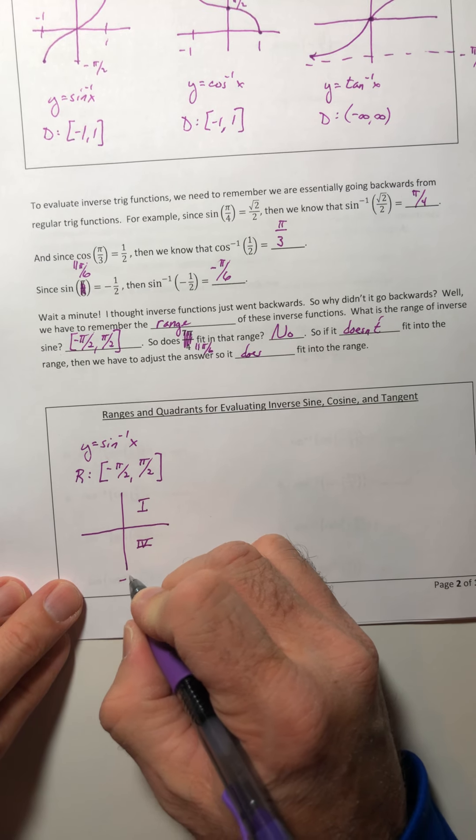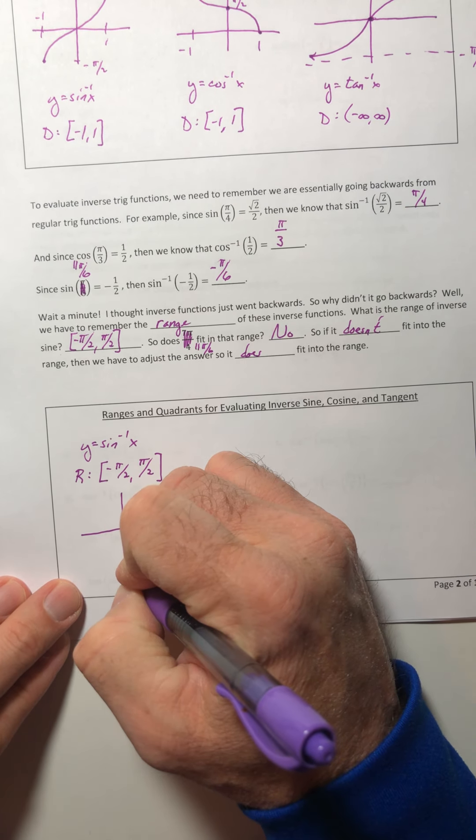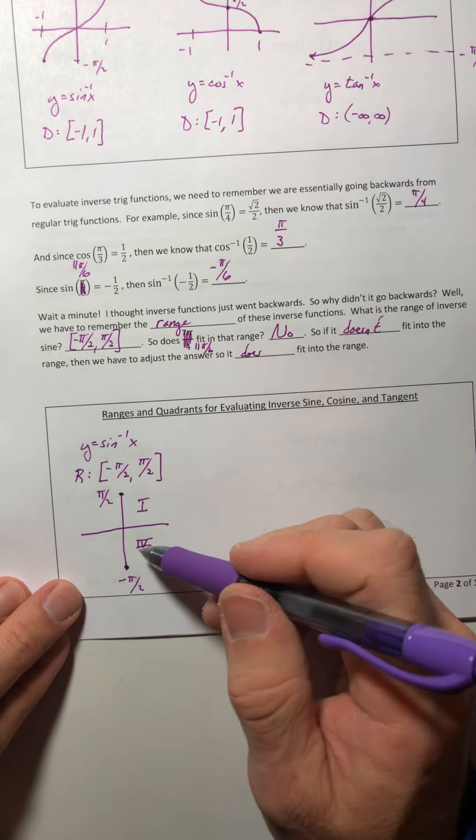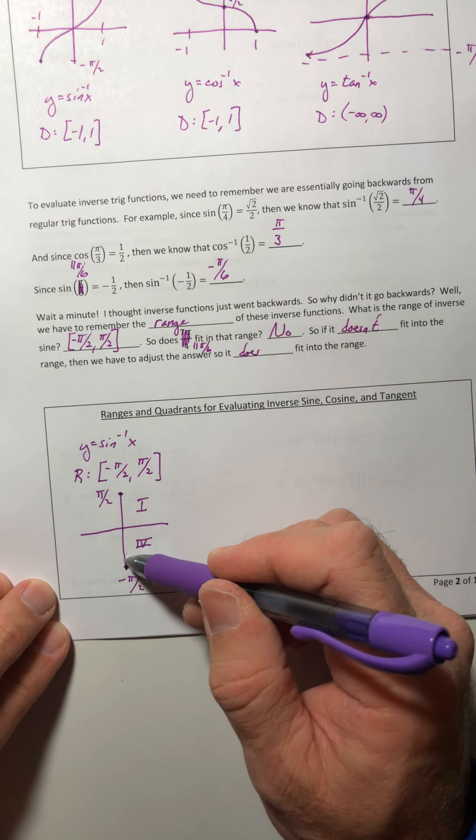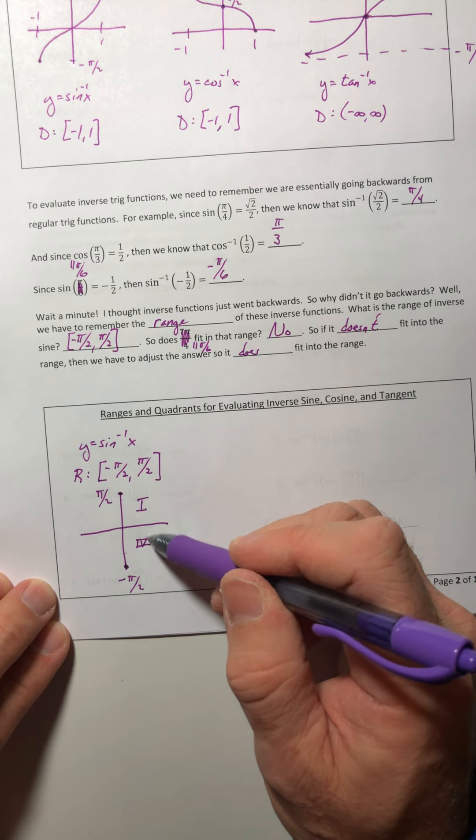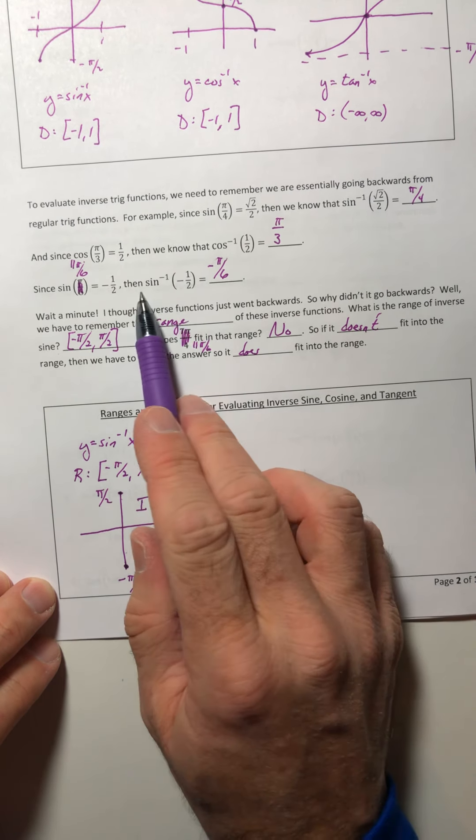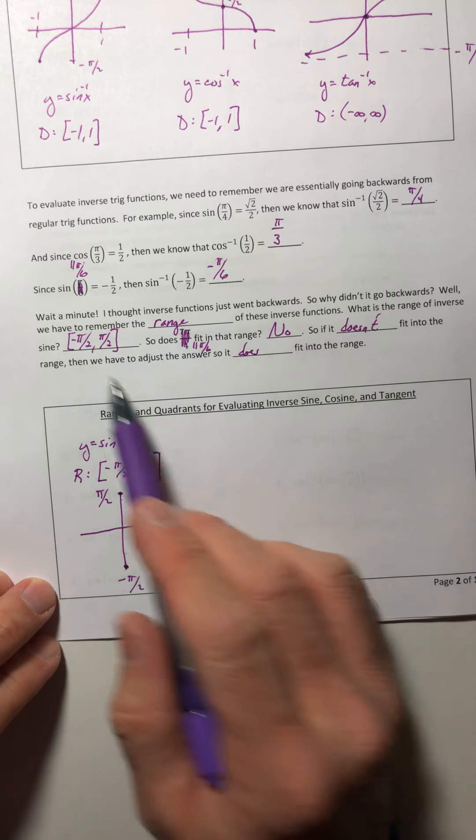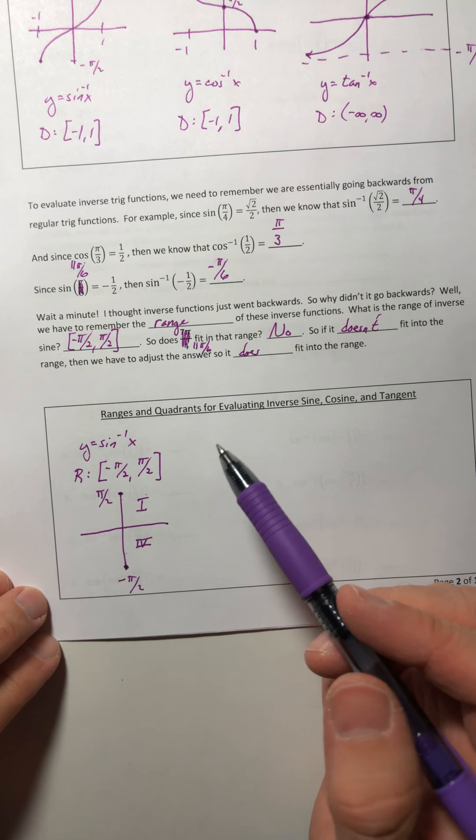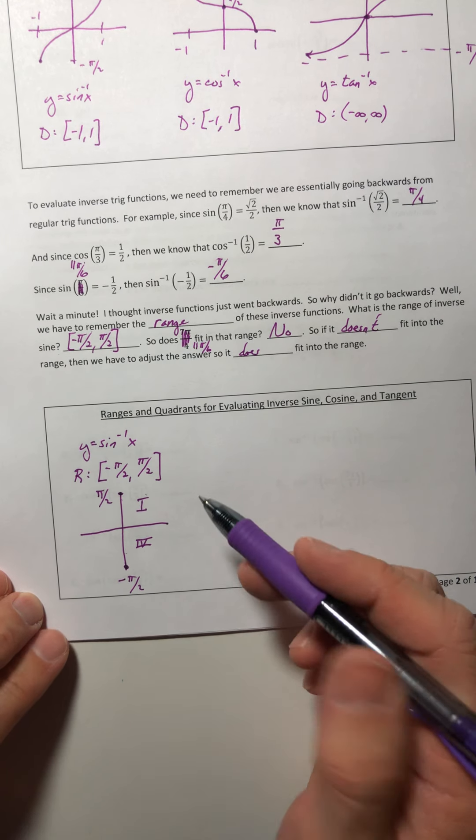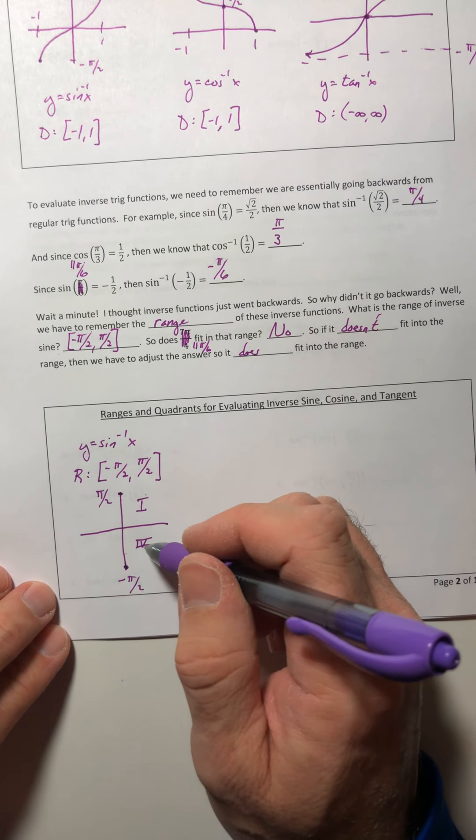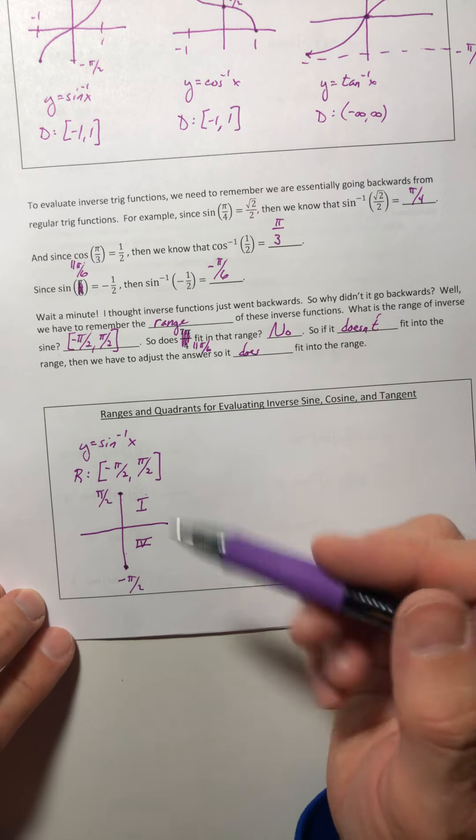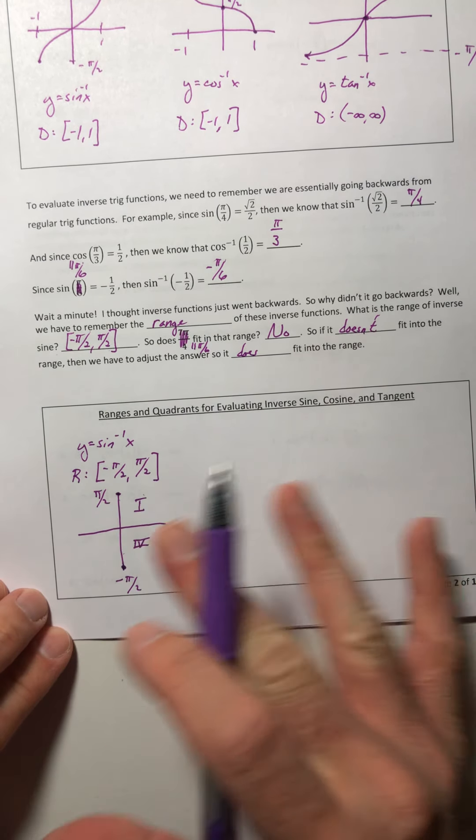Because negative π over 2 on the unit circle is down here, and positive π over 2 is up at the top. So your angles are rotating in between negative π over 2 to π over 2. So any answer that you get for inverse sine has to fall into one of these two quadrants, either one or four, and still be in this range here. So the 11π over 6, like it definitely is in quadrant 4, but it's not in the range. So you have to adjust it, which means you're going to have to rotate in a different direction to get an answer that fits in the range. And we'll talk about that more in just a second.